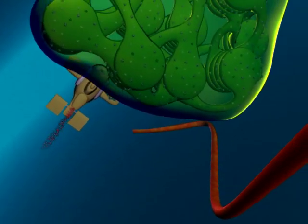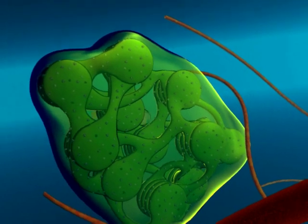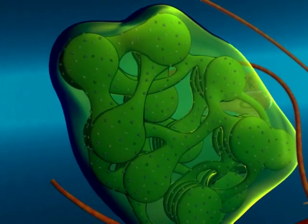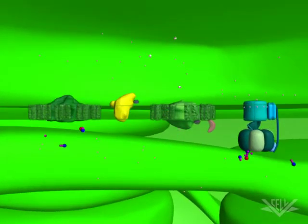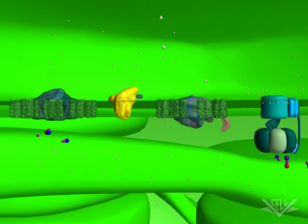Finally, we see an organelle only found within plant cells. This is the chloroplast. Here, light energy from the sun is converted into chemical energy in the form of ATP.